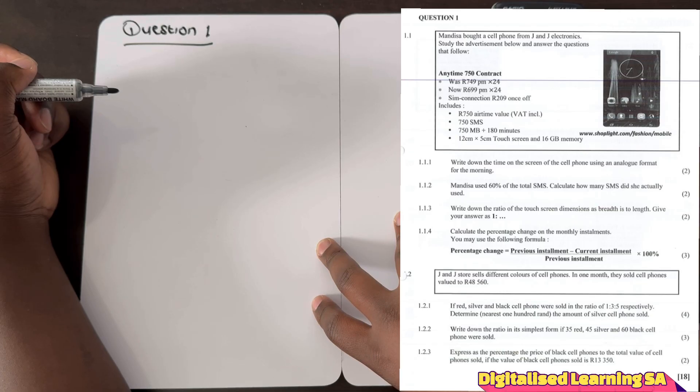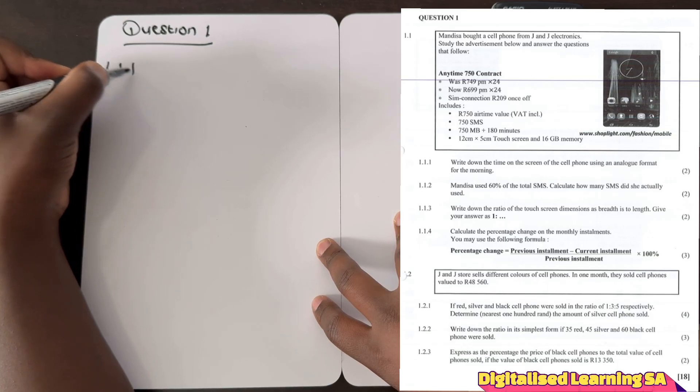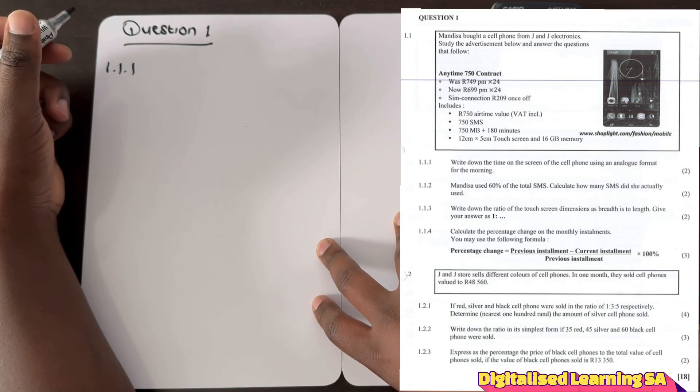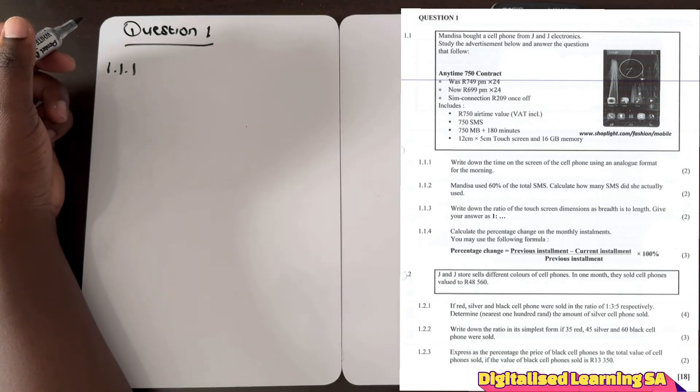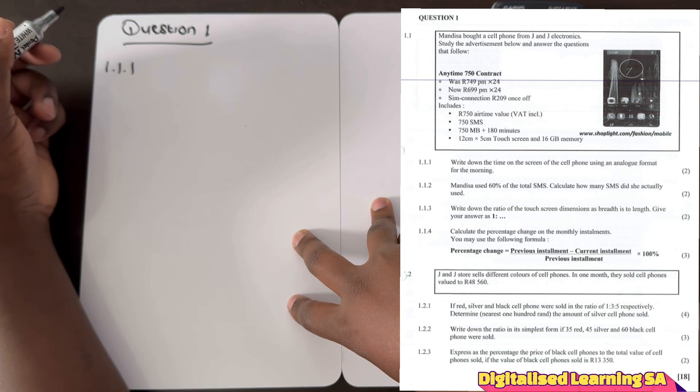The next question is 1.1.4 which states that calculate the percentage change on the monthly installments, and we are given the formula which we can use. If we go to the scenario it states that Mandisa bought a cell phone from J&J Electronics. Study the advertisement below and answer the questions that follow. The cell phone was 749 rands per month for 24 months and now it is 699 rands per month.